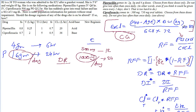We use the Cockcroft-Gault equation, which we already discussed. If you didn't watch that video, you should watch it. Since she's a female patient, we multiply the equation — 140 minus age times body weight, divided by serum creatinine times 72 — by 0.85. The body weight used in this problem is the ideal body weight.